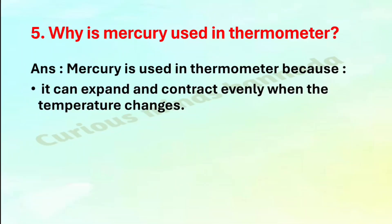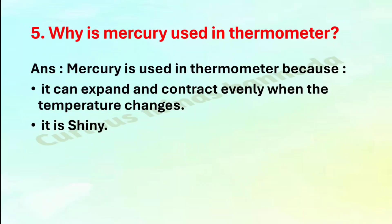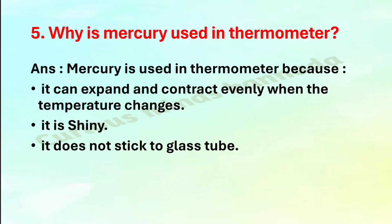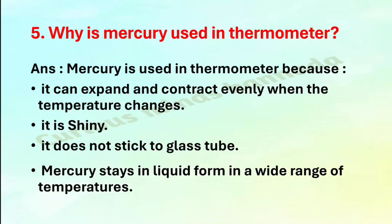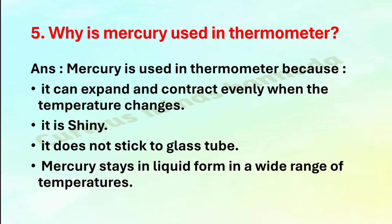Fifth: Why is mercury used in thermometers? Answer: Mercury is used in thermometers because it can expand and contract evenly when the temperature changes, it is shiny, it does not stick to the glass tube, and mercury stays in liquid form across a wide range of temperatures.